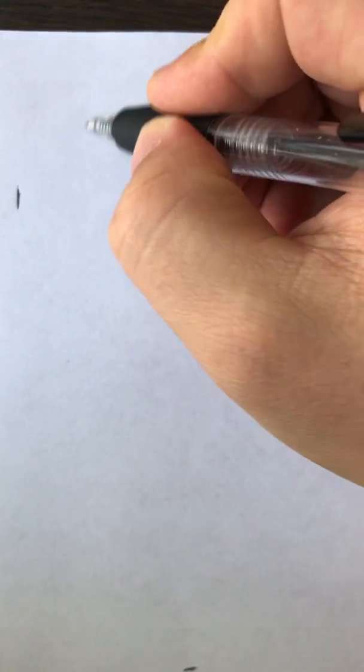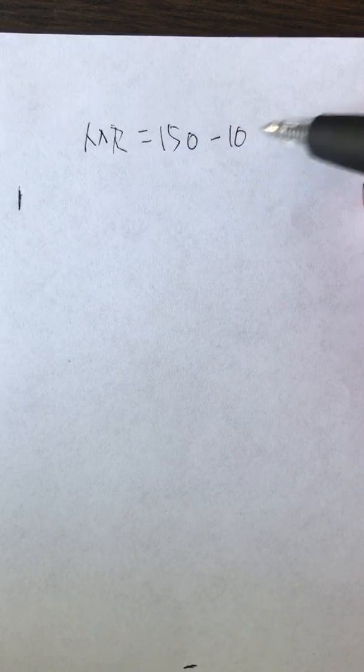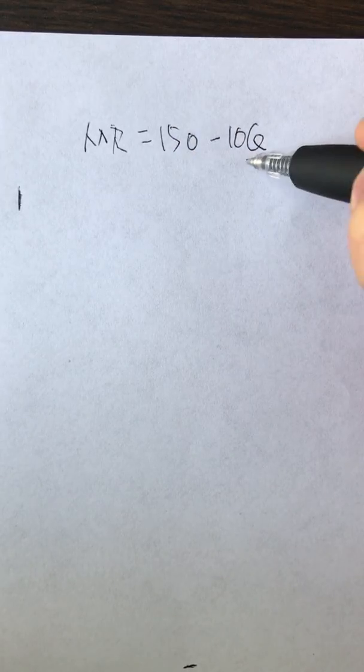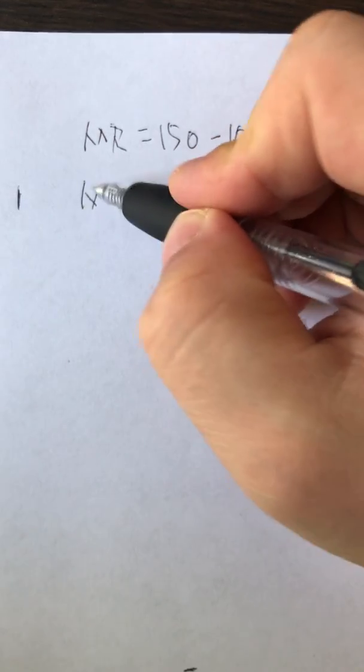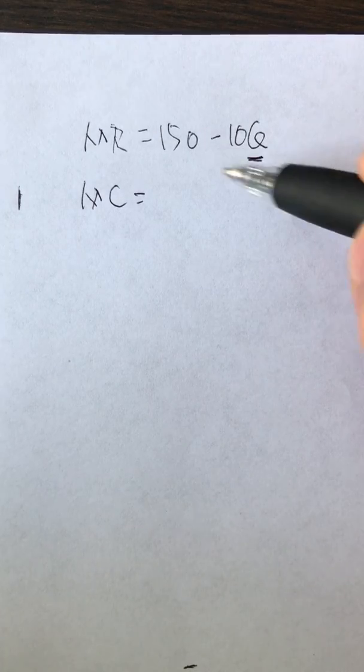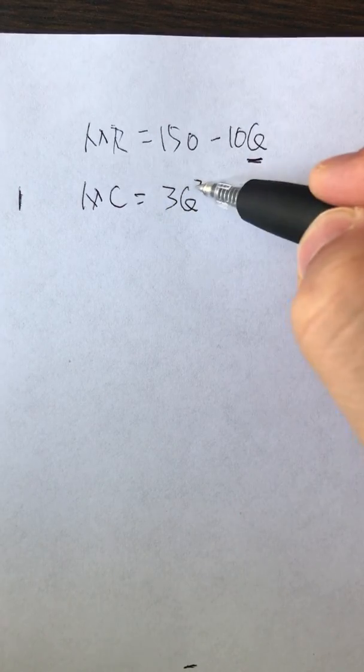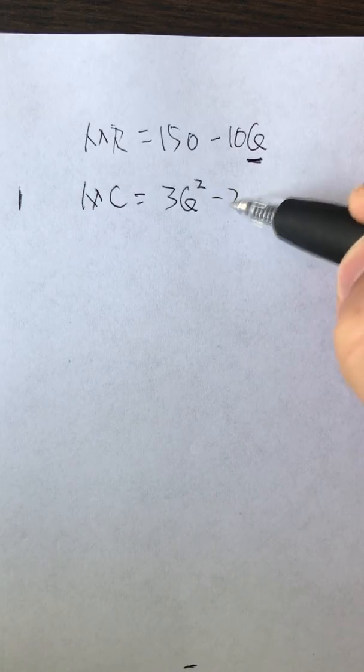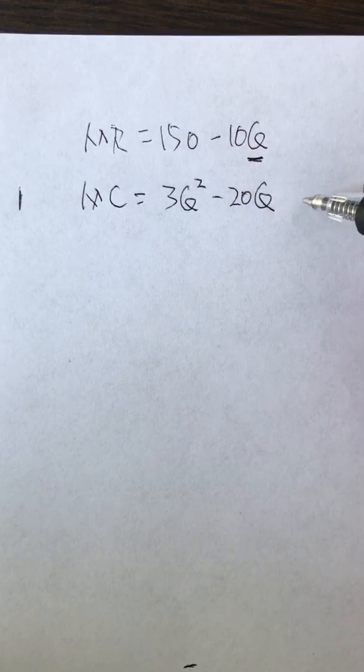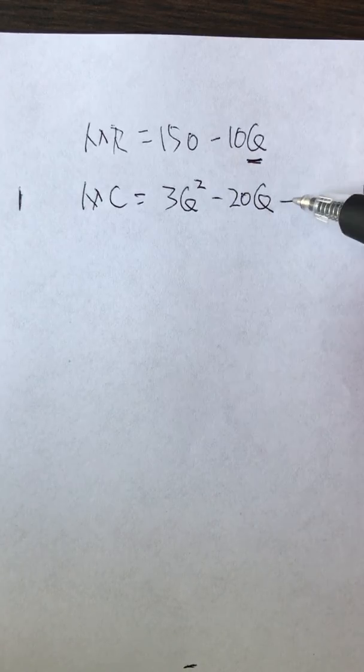In the problem we have, marginal revenue equals 150 minus 10Q, where Q is the quantity of units produced, and the marginal cost is 3Q squared minus 20Q plus 73.